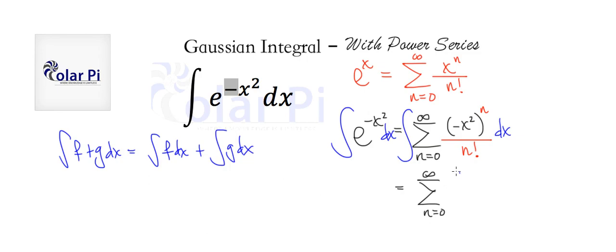The integral of, and then it's going to be this guy. We can simplify a bit by writing minus x to the 2n.